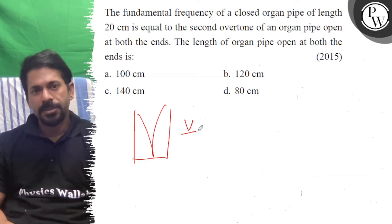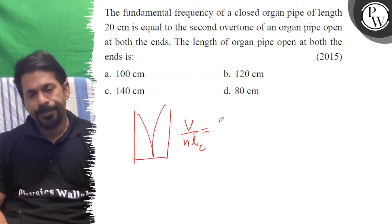So fundamental of closed is nothing but V by 4L closed. That is the fundamental of closed.